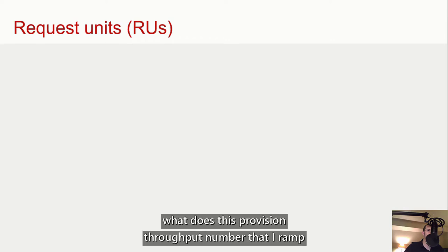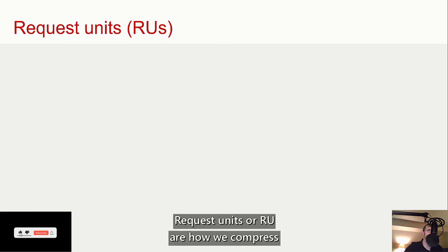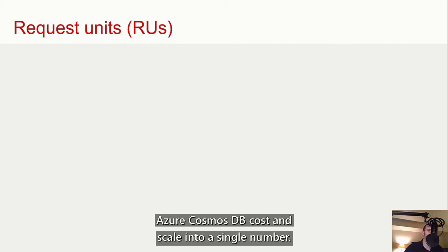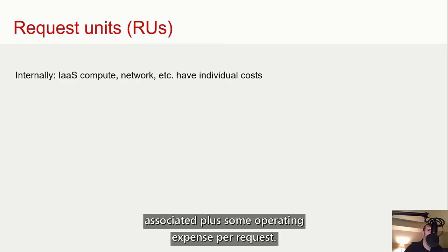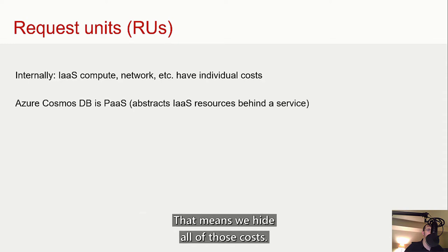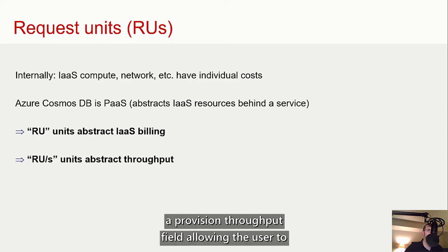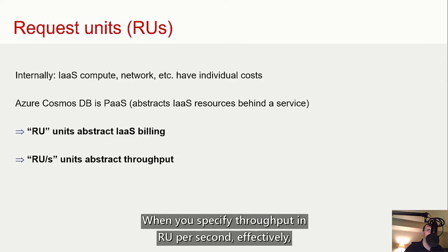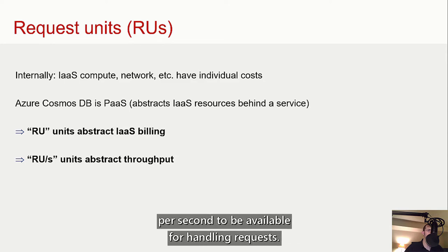You might wonder what the provisioned throughput number actually means — what are its units? Request units, or RU, are how we compress Azure Cosmos DB cost and scale into a single number. Azure Cosmos DB comprises numerous infrastructure components, each with some capacity cost plus some operating expense per request. But as a platform as a service, we hide all of those costs. Our backend assigns each request a processing cost in abstract request units based on estimating capacity and operating expenses. Each container has a provisioned throughput field, allowing the user to specify a ceiling on request units per second — effectively provisioning a quantity of database compute per second.